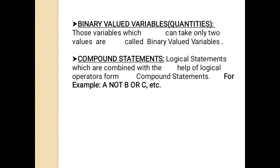The third is binary valued variables or quantities — those variables which can take only two values are called binary valued variables. For example, 'it will rain' is a binary valued variable because it depends upon whether it rains or not. The last is compound statements — logical statements which are combined with the help of logical operators form compound statements. For example, NOT, AND, OR are the logical operators.